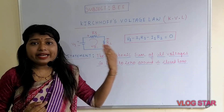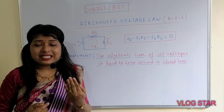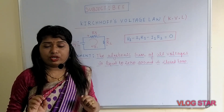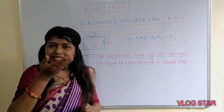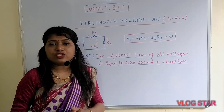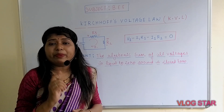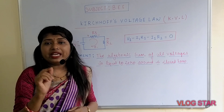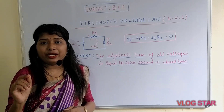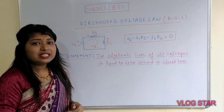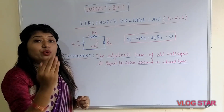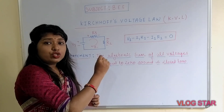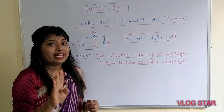The fourth sign convention says that if the direction of the current and the polarity assigned to the resistor are both in the opposite direction, there will be a rise in potential and the voltage drop across that particular resistor is given by V = +i × R. In this circuit you need to apply Kirchhoff's Voltage Law with the help of these four sign conventions.